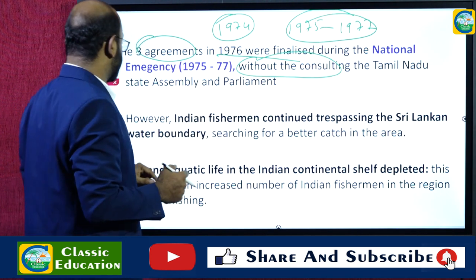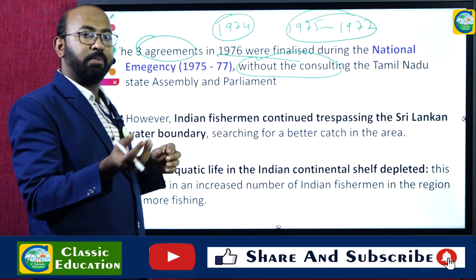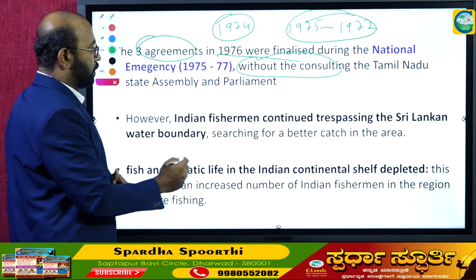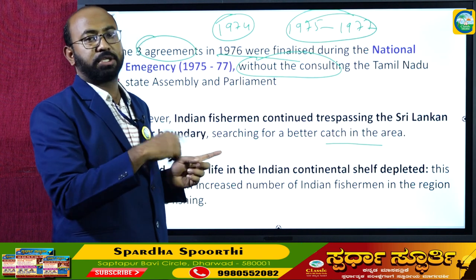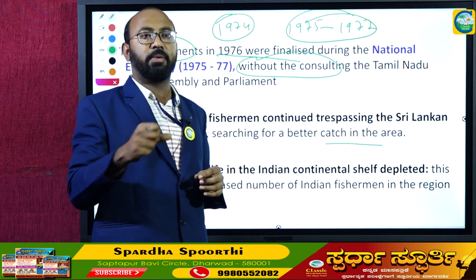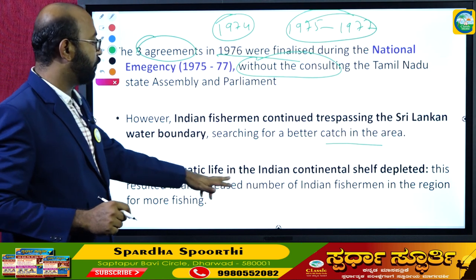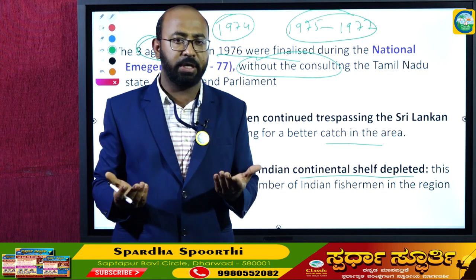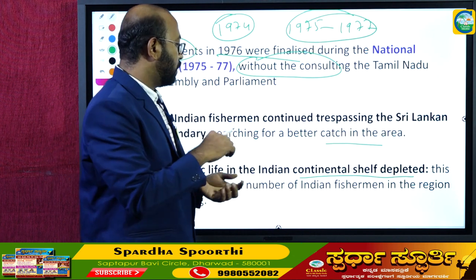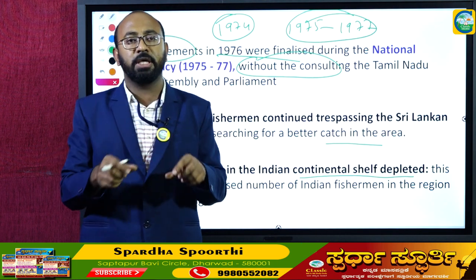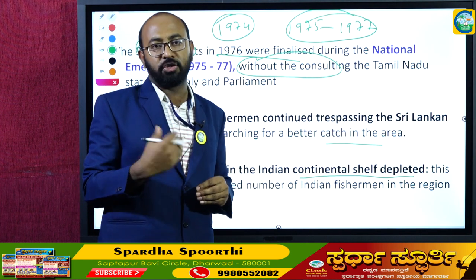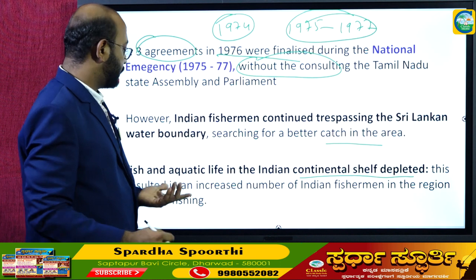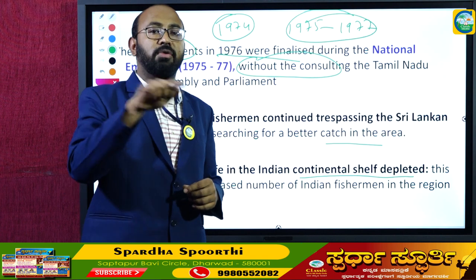Though Indian fishermen were not allowed to fish in Sri Lankan waters, they continued to trespass, searching for better catch in the area. This happened because the fish and aquatic life in the Indian continental shelf had depleted due to pollution and increased fishing activity. With less fish available in Indian waters, Indian fishermen were forced to go deeper into the oceans, which led to increased presence around the Kachitivu Island area.